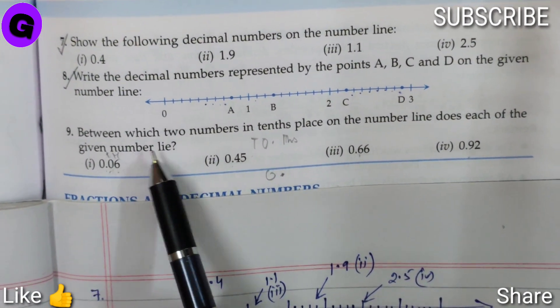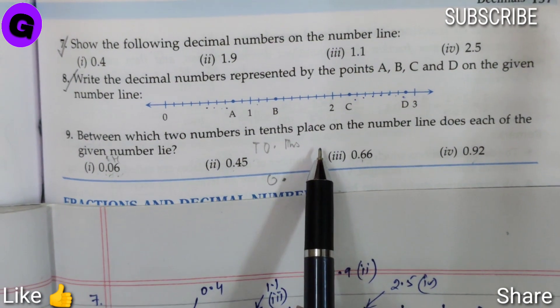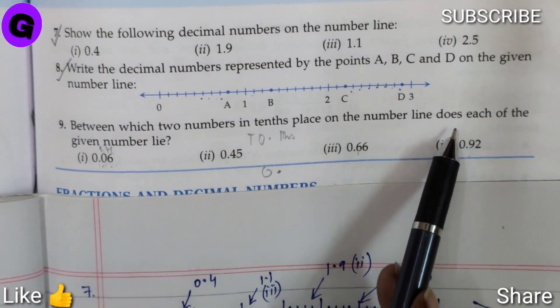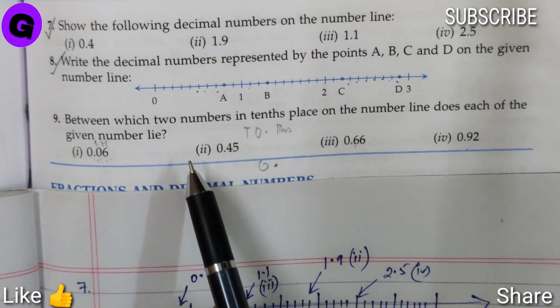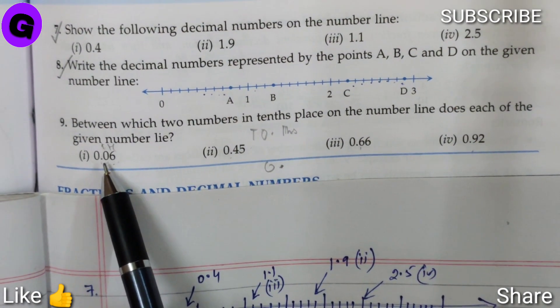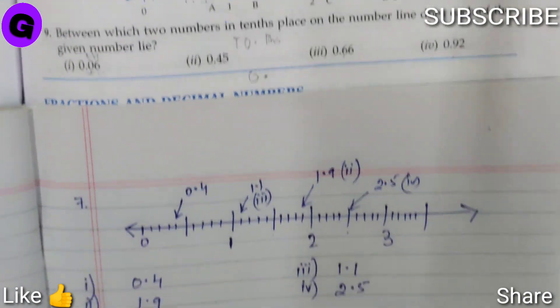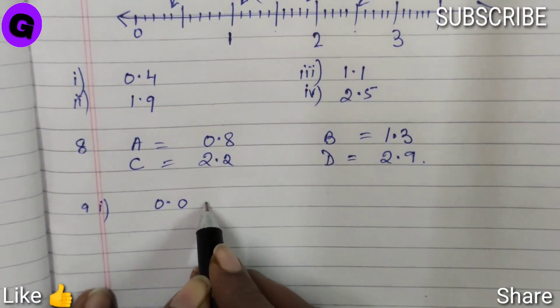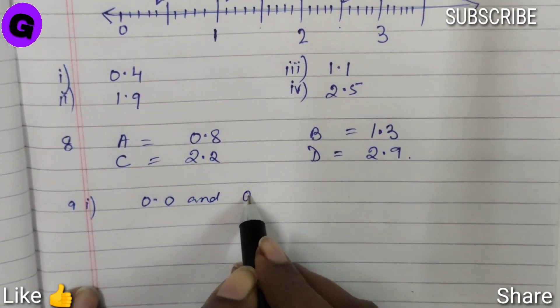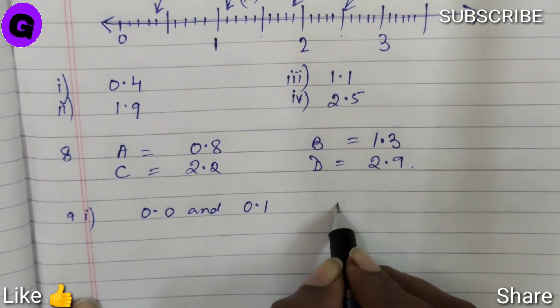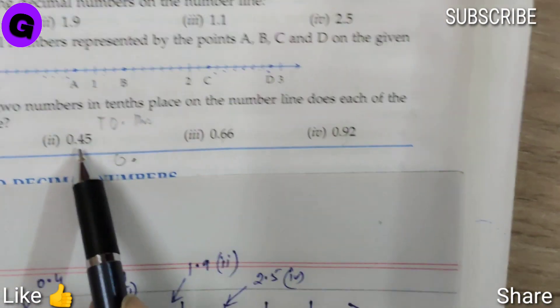Between which two numbers in tenths place on the number line does each of the given number lie? Now tenths place means here we are talking about 0, so 0 lies between 0.0 and 0.1. Number 2, tenths place is 4, so 4 lies between 0.4 and 0.5.